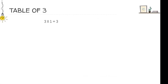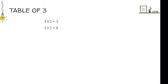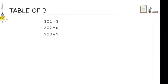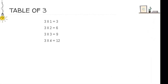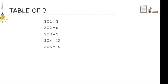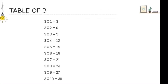3 1's are 3. 3 2's are 6. 3 3's are 9. 3 4's are 12. 3 5's are 15. 3 6's are 18. 3 7's are 21. 3 8's are 24. 3 9's are 27. And 3 10's are 30. The next one is table of 4.